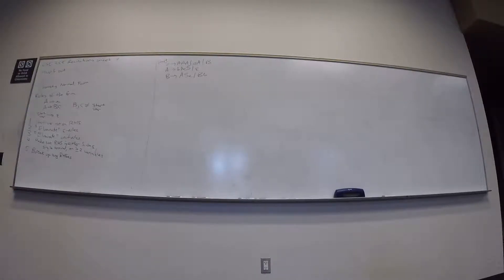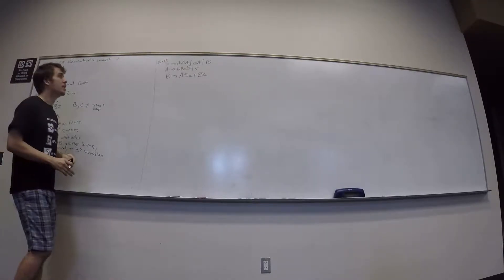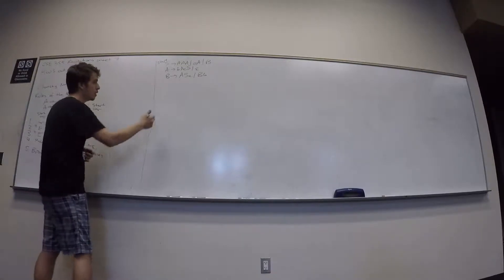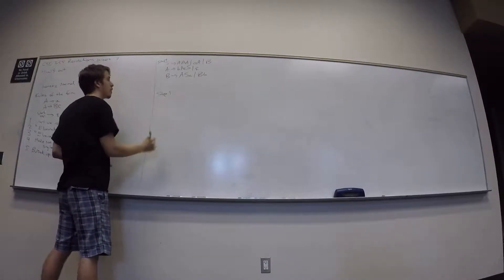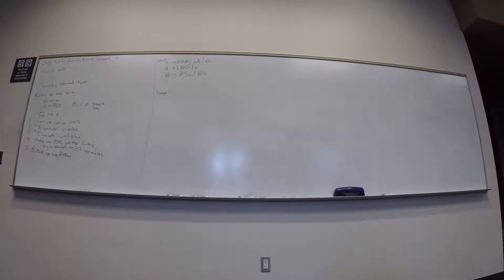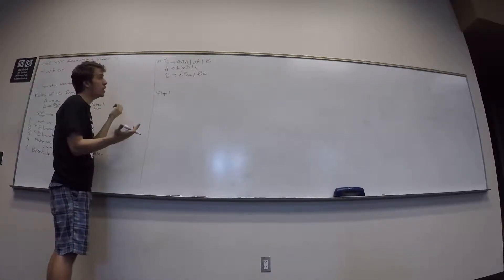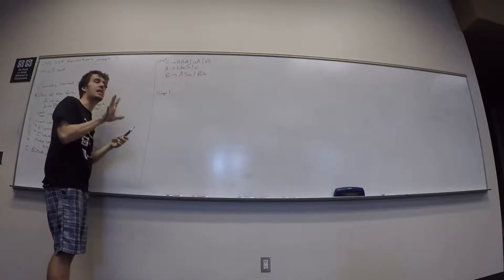Let's convert this grammar to CNF — fair warning, it will get pretty big, so you'll probably need the back side. Given: S to AAA or AA or B; A goes to BAC S or epsilon; B goes to ASA or B. Step 1: is the start variable on the right-hand side? Yes, S appears twice, so we need to fix it.